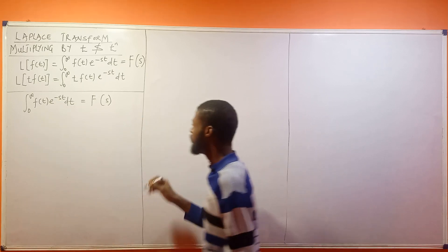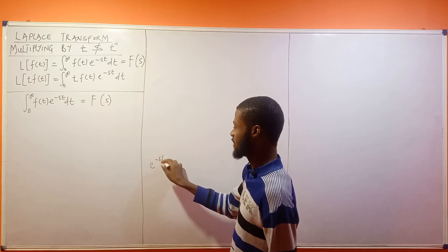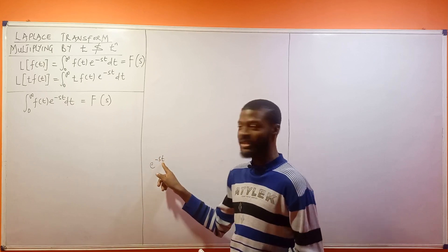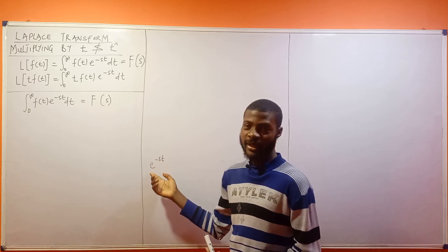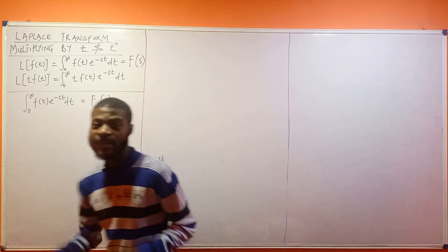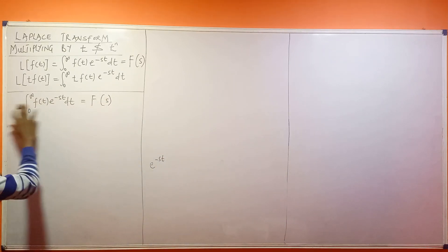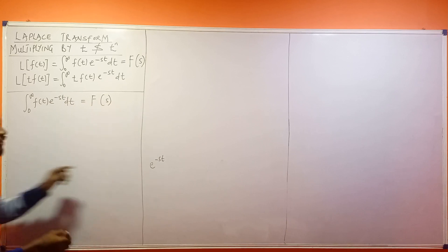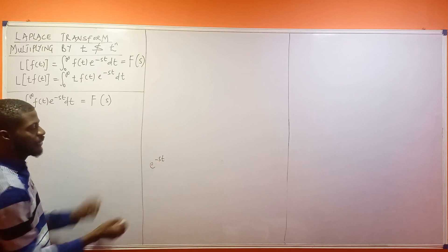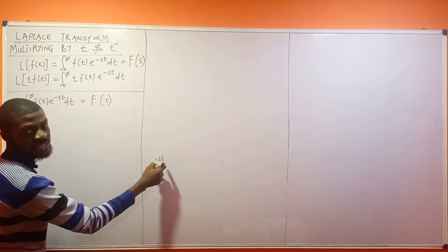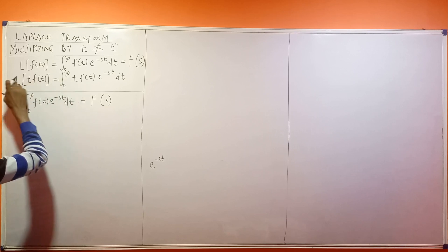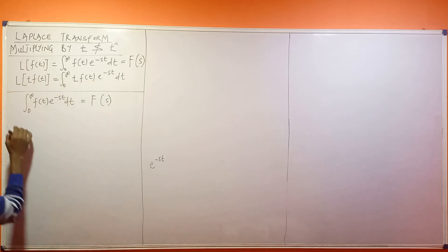If we have e^(−st) and we differentiate with respect to s, do you agree that we're going to have a t coming out? That's how we differentiate exponentials. I'm going to differentiate with respect to s, because if you differentiate e^(−st) with respect to t you get s, but with respect to s you get t — and we need to squeeze out that t.